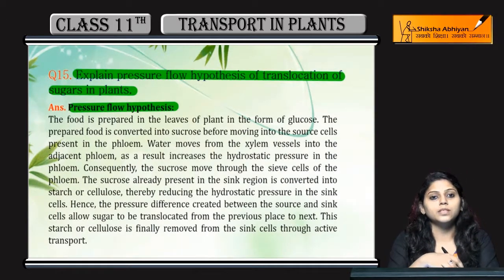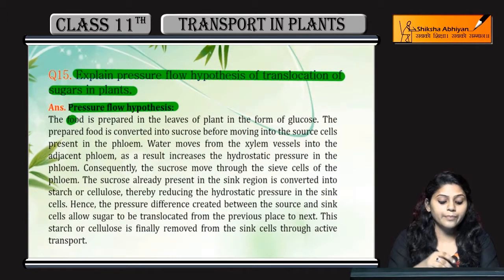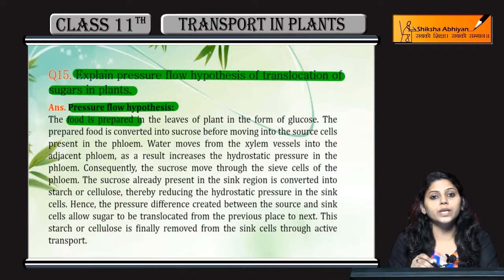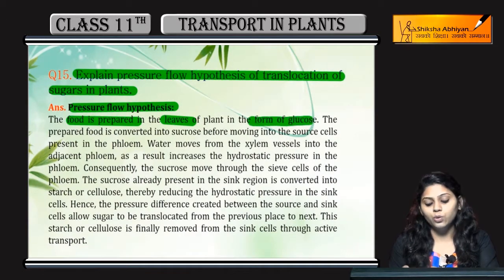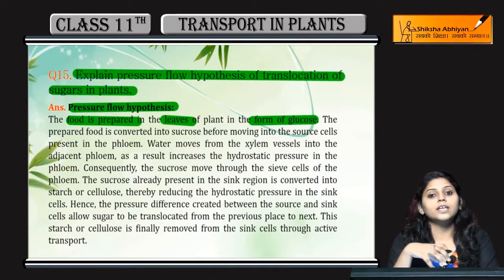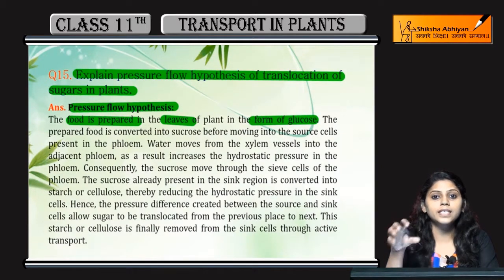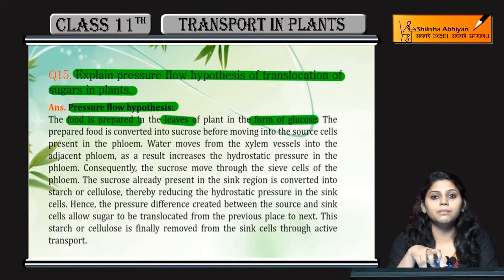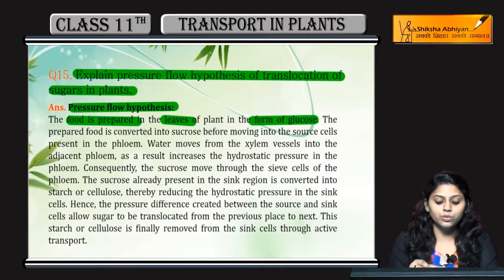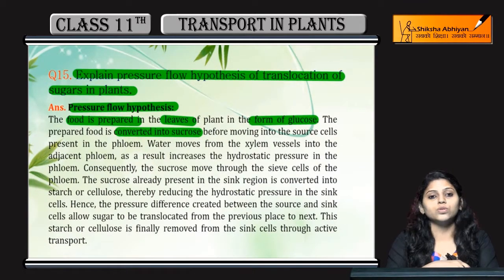Pressure flow hypothesis me kya hota hai? Food jo prepare hota hai leaves me in the form of glucose — jab use transport hona hota hai ya phir baqi sink me jana hota hai, baqi plant ke parts me. Then ye glucose convert ho jata hai into sucrose.